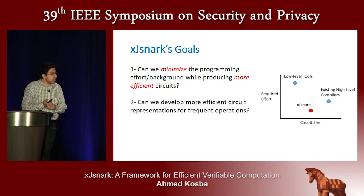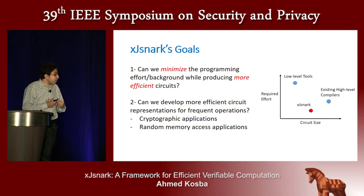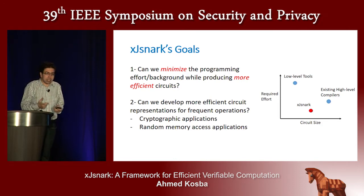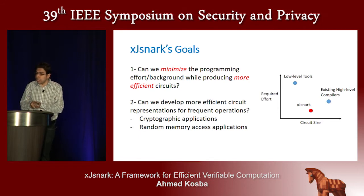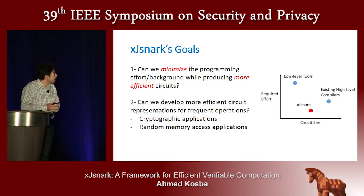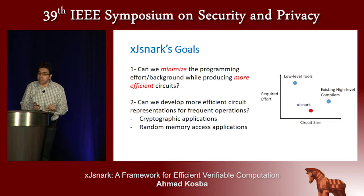Can we also develop more efficient circuits for frequent operations? We want to focus mainly on cryptographic applications, because almost all the applications shown on the first slide have a cryptographic component in the circuit. What makes ZKSNARKs attractive for many applications is the zero-knowledge aspect, which means there will be cryptographic gadgets in the circuit like verifying hashes, signatures, or encryption.